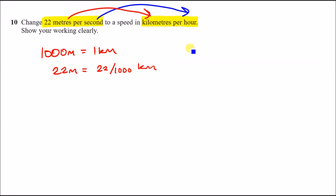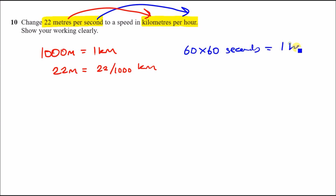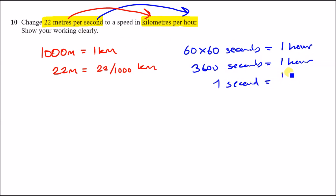For the time component, we go from seconds to minutes to hours. There are 60 seconds in a minute and 60 minutes in an hour, meaning 60 × 60 = 3600 seconds in one hour. Because it's per second, one second equals 1/3600 of an hour.